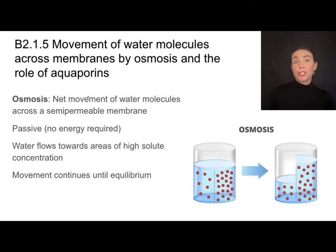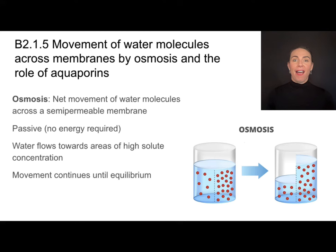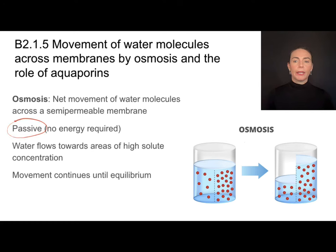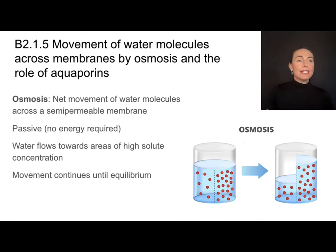A special channel protein called an aquaporin — exactly what it sounds like — is a pore to help water move into or out of a cell. That process of water moving into or out of a cell across a membrane is called osmosis: the net movement of water molecules across a semi-permeable membrane. It is passive, meaning no energy is required. Imagine a scenario where little red dots represent a solute like glucose — high concentration on one side, low on the other, separated by a semi-permeable membrane.